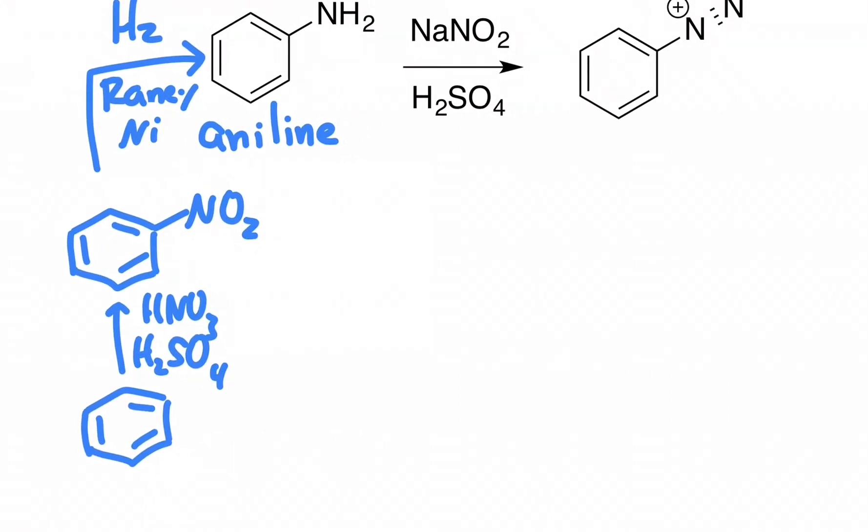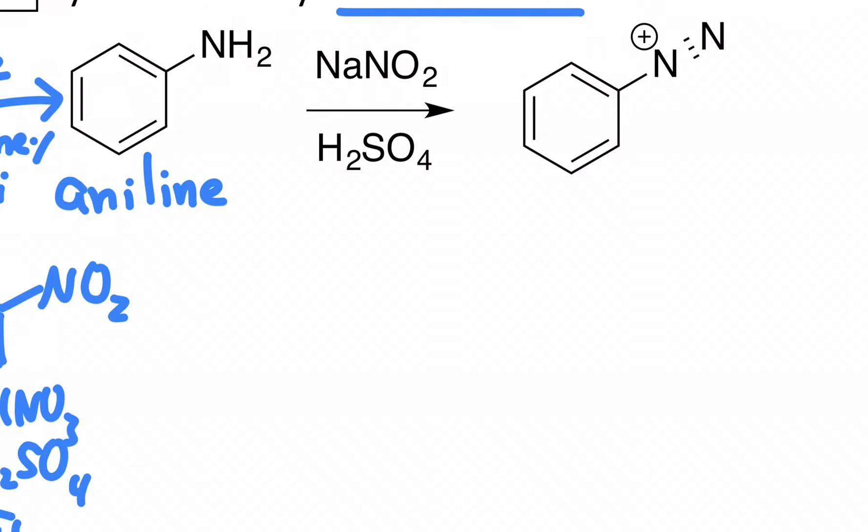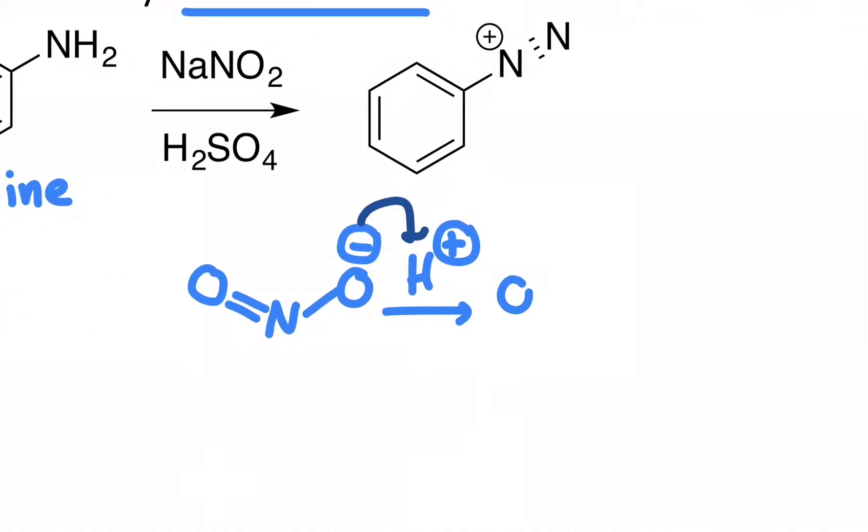And then you can turn that aniline into a diazo using solid sodium nitrite and a strong acid like sulfuric acid. Like many of the reactions we've learned today, the first step involves just the combination of the reagents. So I'll draw out the nitrite ion, and in the presence of a strong acid, you protonate this actually twice. I'll show one at a time. You first make nitrous acid, but then it protonates again.